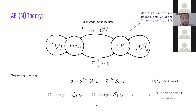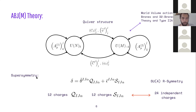In the quiver, whenever an arrow exits a node it picks up a U-dagger factor, and when it enters a node it picks up a U factor — hence the adjoint. Scalars and fermions are in the bi-fundamental because they transform under both U(N) and U(M) gauge groups. You can follow the quiver structure to track the gauge transformation properties of all fields.